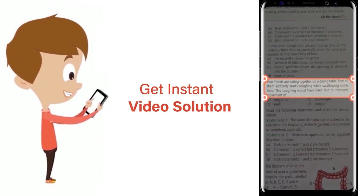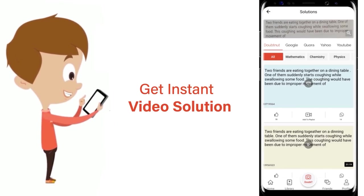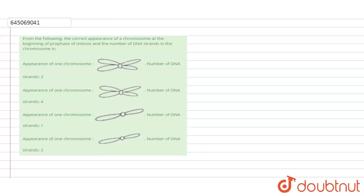Hello students, have a look at the question. The question is: from the following, the correct appearance of a chromosome at the beginning of prophase of mitosis and the number of DNA strands in the chromosome is. We are having four different options.